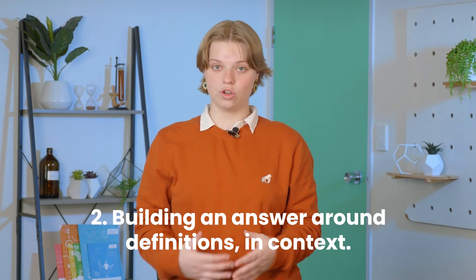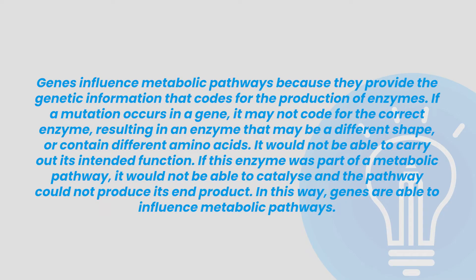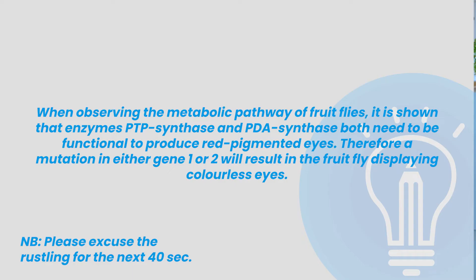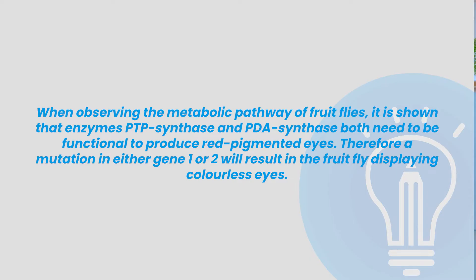Step 2: building an answer around definitions and context. Right now we've defined what we're working with, but we need to connect it all together in the explained section. Genes influence the metabolic pathways because they provide the genetic information that codes for the production of enzymes. If a mutation occurs in a gene, it may not code for the correct enzyme, resulting in an enzyme that may be a different shape or contain different amino acids — it would not be able to carry out its intended function. If this enzyme was a part of a metabolic pathway, it would not be able to catalyse and the pathway could not produce its end product. In this way, genes are able to influence metabolic pathways. We're starting to make great connections now, but we're missing context. When observing the metabolic pathway of fruit flies, it has shown that enzymes PTP synthase and PDA synthase both need to be functional to produce red pigmented eyes. Therefore, a mutation in either gene 1 or gene 2 will result in the fruit fly displaying colourless eyes.